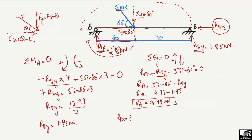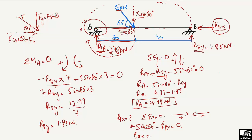The only remaining unknown is R_BX, the horizontal support reaction at B. There is only one horizontal load acting on the beam: 5·cos(60°). The roller support at A cannot take horizontal load, so R_BX must balance it. Using summation of horizontal forces equal to zero: 5·cos(60°) − R_BX = 0. Therefore, R_BX = 5·cos(60°) = 2.5 kN.